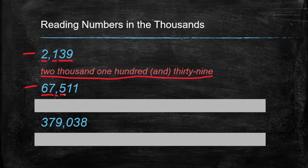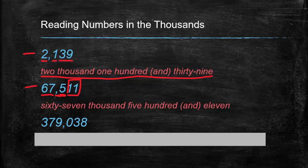The next number has two digits before the comma — sixty-seven thousand. Then five hundred and eleven. Let's check: that's right, sixty-seven thousand five hundred and eleven.